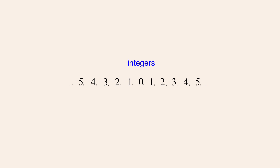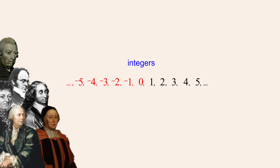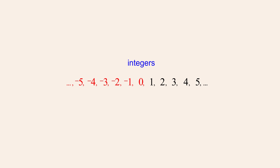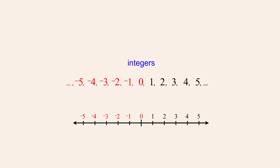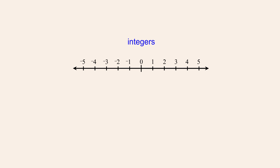When negative numbers and zero were first proposed, it was not without controversy. Many mathematicians felt that negative numbers and zero did not correspond to anything in the real world, and it was not even clear how they should be visualized. Eventually, it was decided that by extending the number line to infinity in two directions, both positive and negative numbers could be represented as well as zero. Even if one rejects the idea that negative numbers represent anything real, sequences of addition and subtraction operations can be performed that give a positive result even though the intermediate results may be negative.